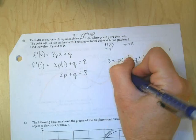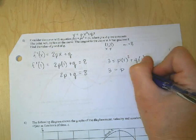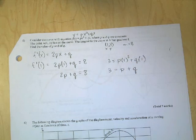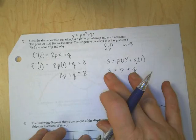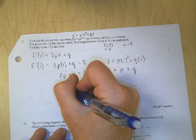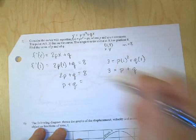1 squared is 1, so 1 times P is P. Q times 1 is Q. Now, notice, I have two equations that both have P and Q, so I can solve using a system of equations. I'm going to go ahead and stack this under here. I'm going to line up: P plus Q is equal to 3.